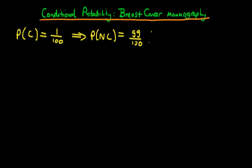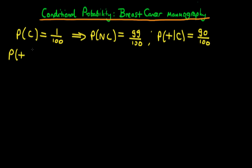Furthermore, the probability that an individual tests positive under a mammogram, given that they actually do have cancer, is about 90%, so 90 over 100 — it's pretty accurate at detecting cancer. Finally, the probability that a woman tests positive given that she doesn't have cancer is something like 8%, so 8 out of 100.